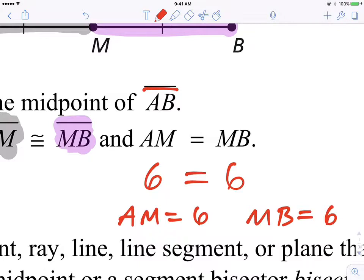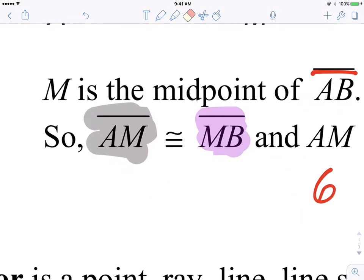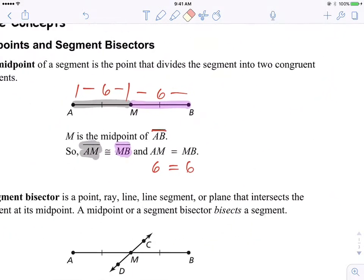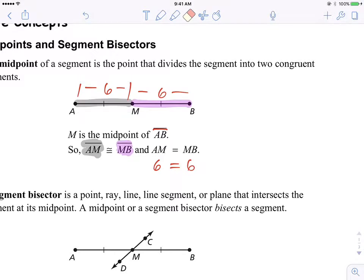So it has to equal some value when you have AM equals, right? Now if you don't know what that value is, but you know they're congruent, then you would just write segment AM is congruent to segment MB. I hope that makes some sense. Now, moving on.